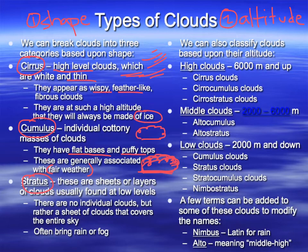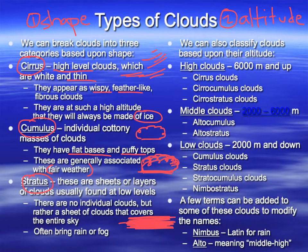Stratus clouds are going to be sheets or layers — just thick horizontal layers of clouds where you really can't see individual clouds. An overcast day is generally going to be stratus clouds. Stratus clouds can sometimes bring fog and sometimes they can bring rain.